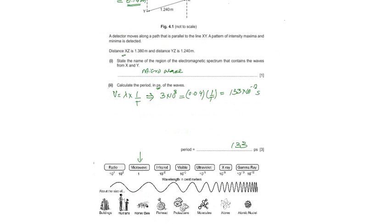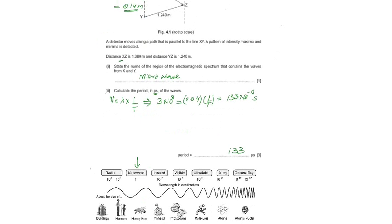Calculate the period in picosecond of the wave. Speed equals lambda times 1 over T. So T will be 133. As we have the thing in three significant figures, we can write 130.